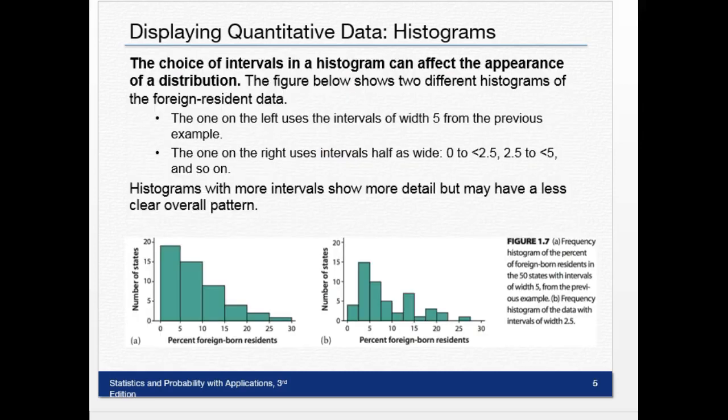So the choice of intervals in a histogram can affect the appearance of a distribution. The figure below shows two different histograms. The one on the left uses intervals of width 5 from the previous example. But the one on the right uses intervals half as wide, only going to 2.5, zero to 2.5, 2.5 to 5, and so on and so forth.